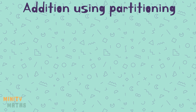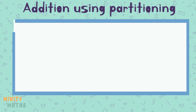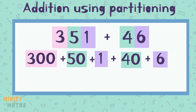To add using partitioning, we first need to break each number down into ones, tens, hundreds, etc. Then add any numbers with a matching place value. For example, add all the tens together.